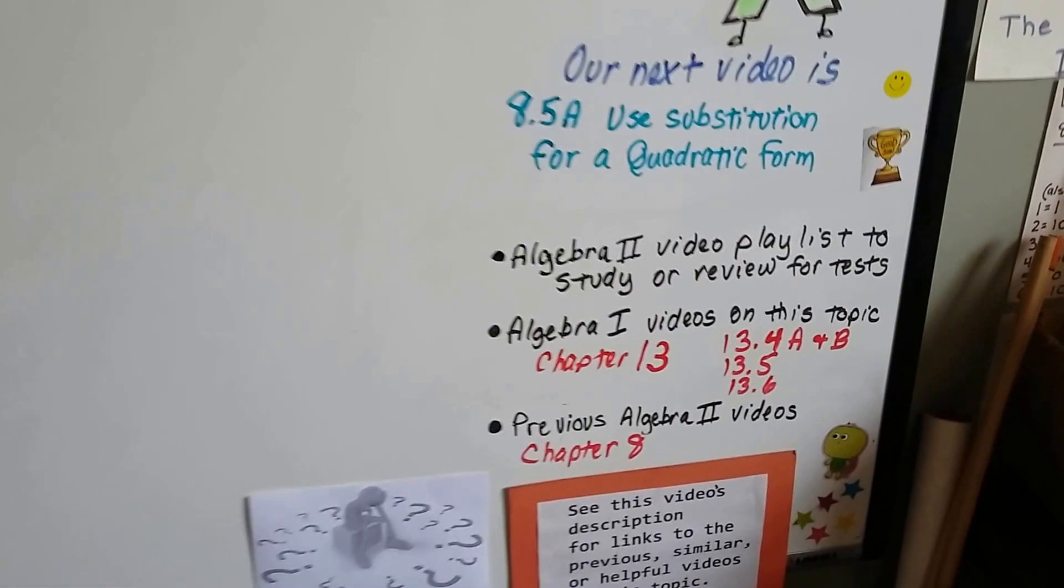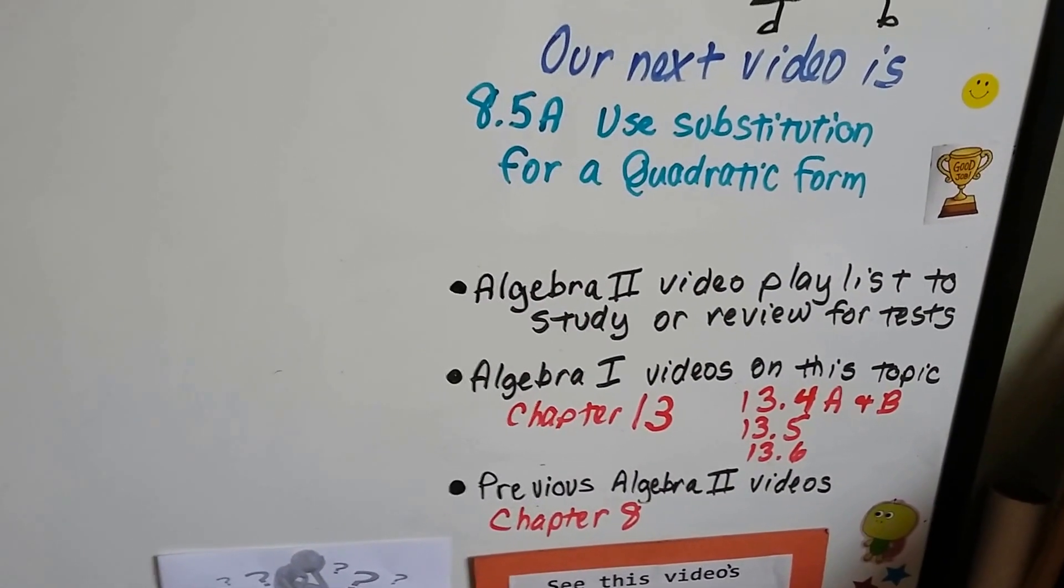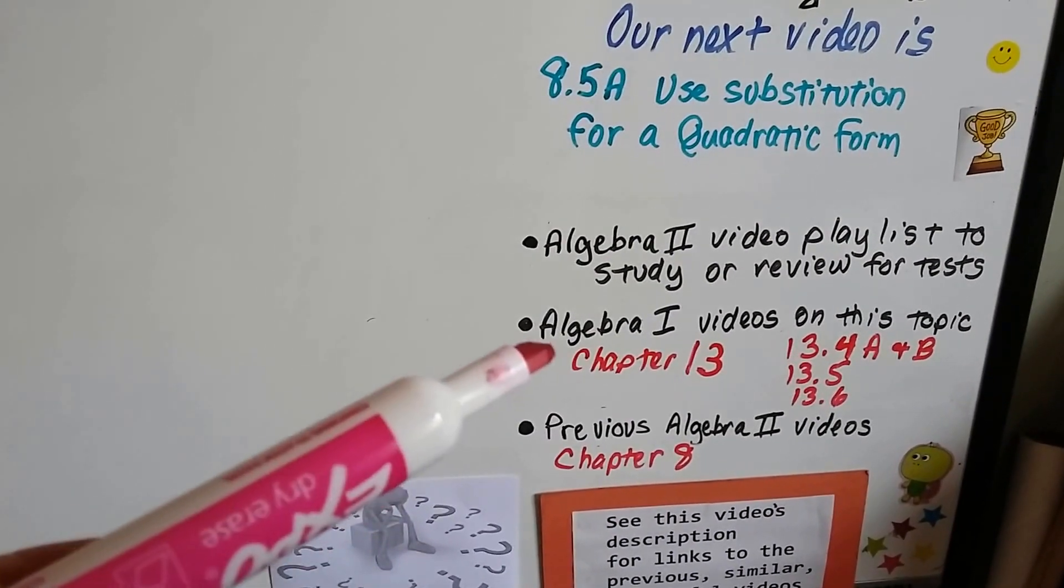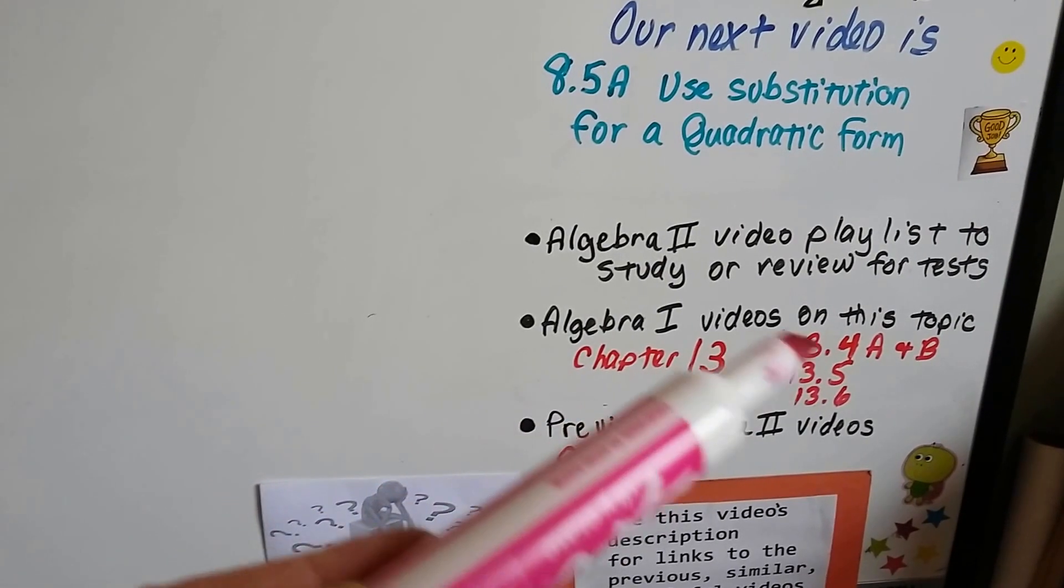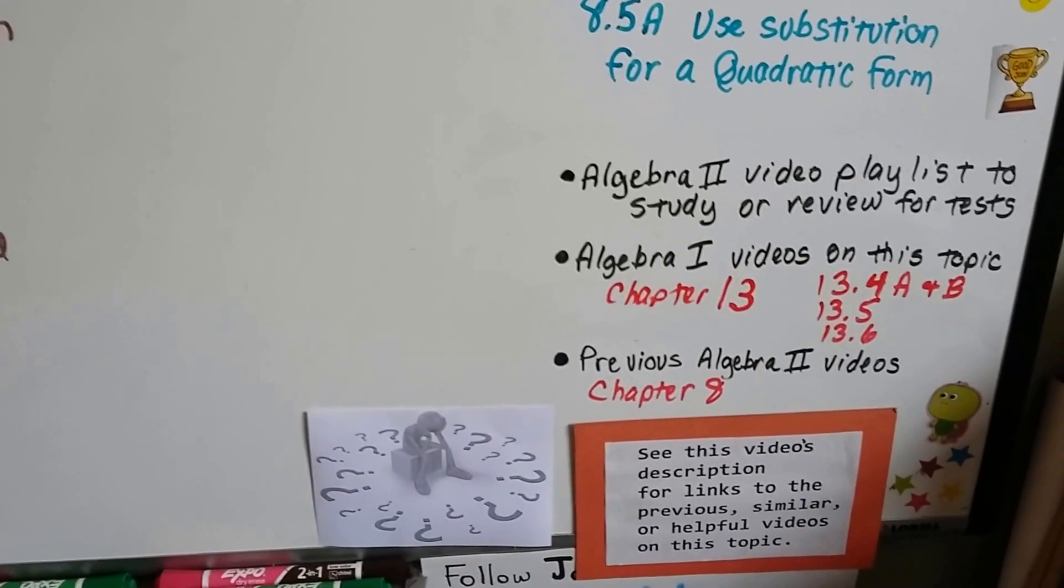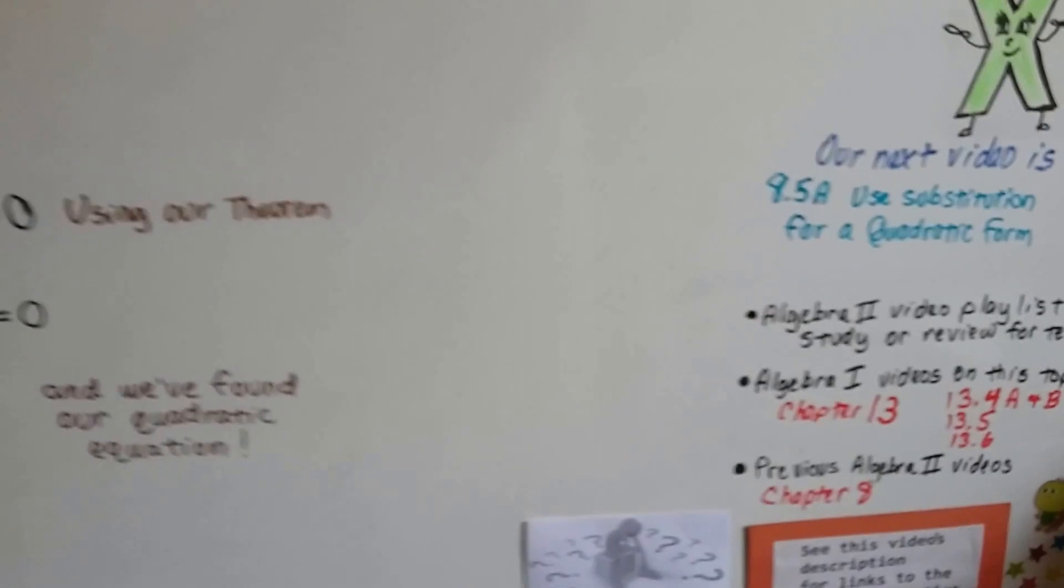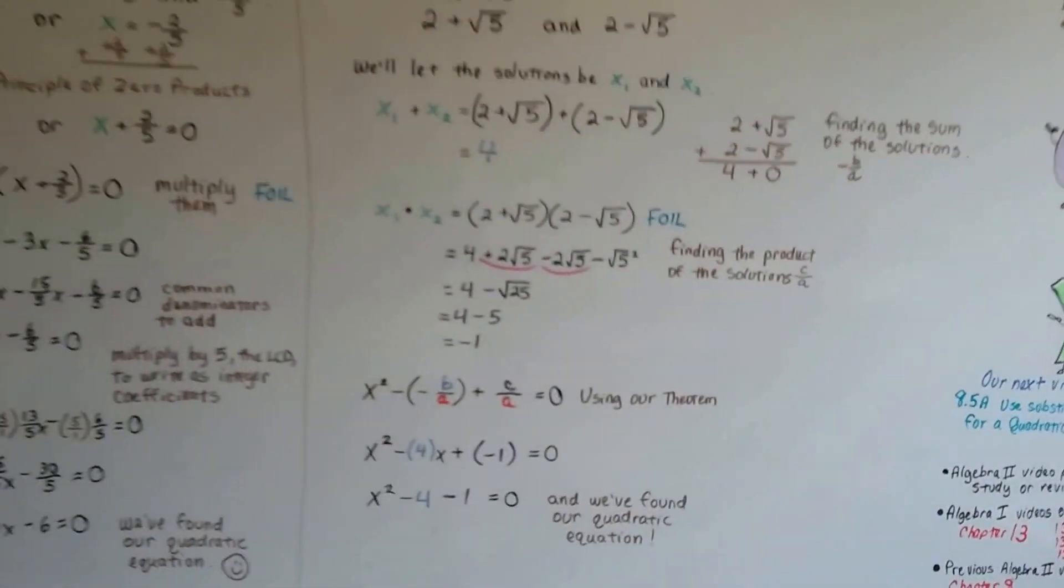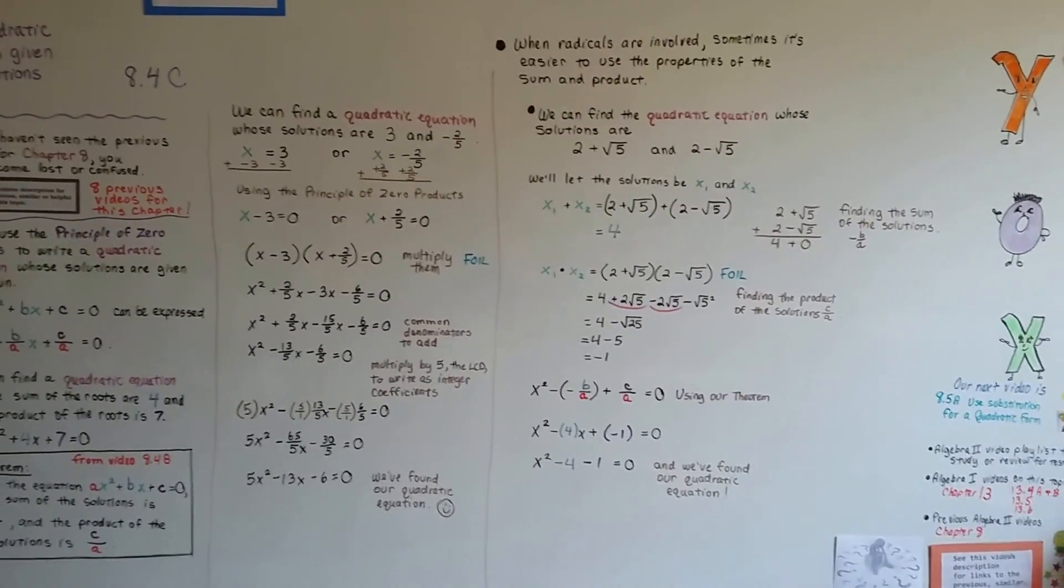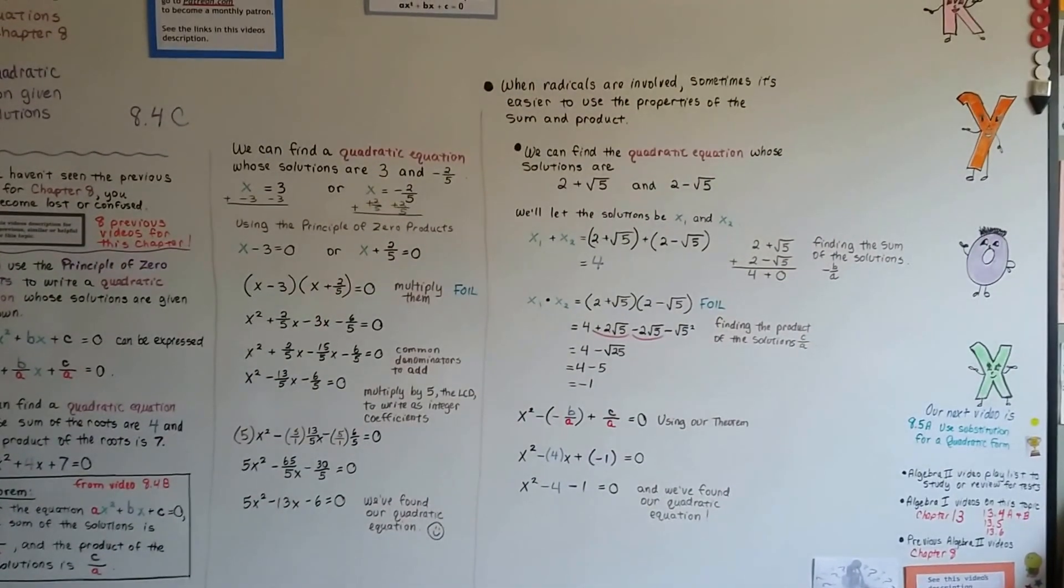Our next video is 8.5a. We're going to use substitution for a quadratic form, and I'm going to add this video to the Algebra 2 playlist. There are links in the description to last year's Algebra 1 for Chapter 13 that talked about quadratic equations and discriminants and formulas, and all those previous videos for Chapter 8. If you're lost or confused, click on the description and the links that you think will help you, or watch all the videos for Chapter 8 if you really want to understand what's going on. I hope you're having a great day, and I'll see you next video.